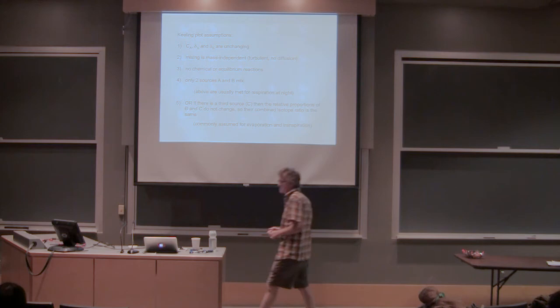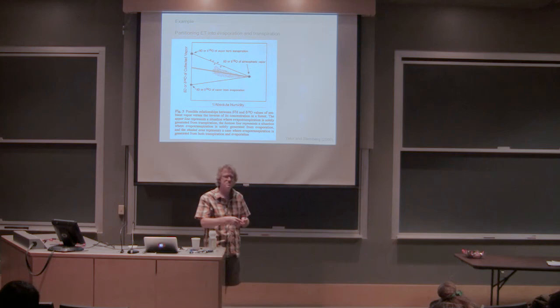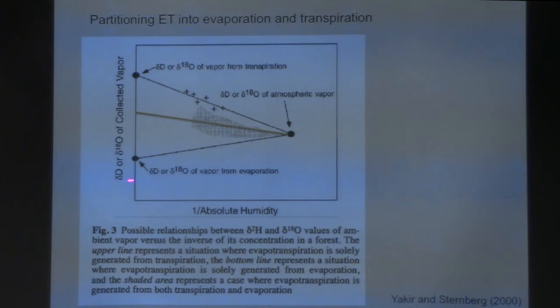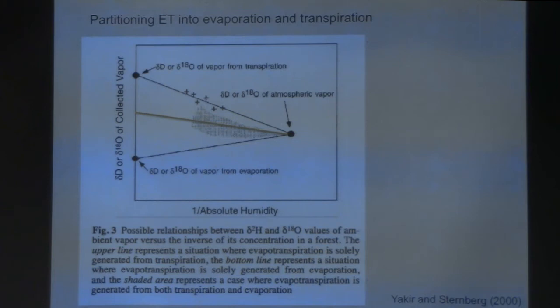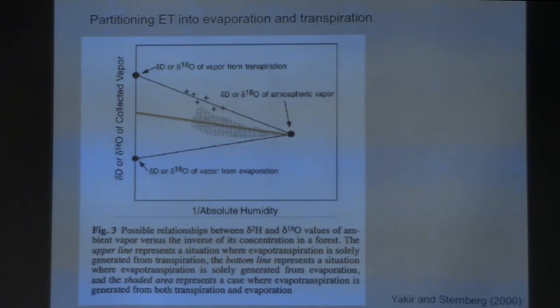The Keeling plot assumes only two sources, or that if there is an additional source its relative proportions are unchanging. The Keeling plot is not only applied to CO2 — it applies to any linear mixing of two isotopically distinct things. An example is the hydrogen or O18 composition of water vapor plotted as 1/C_M (absolute humidity). If transpiration and evaporation differ in isotopic composition, a mixing line tells you how much evaporation versus transpiration is occurring. Dave Williams has applied these Keeling plots to water vapor to understand water fluxes in ecosystems.